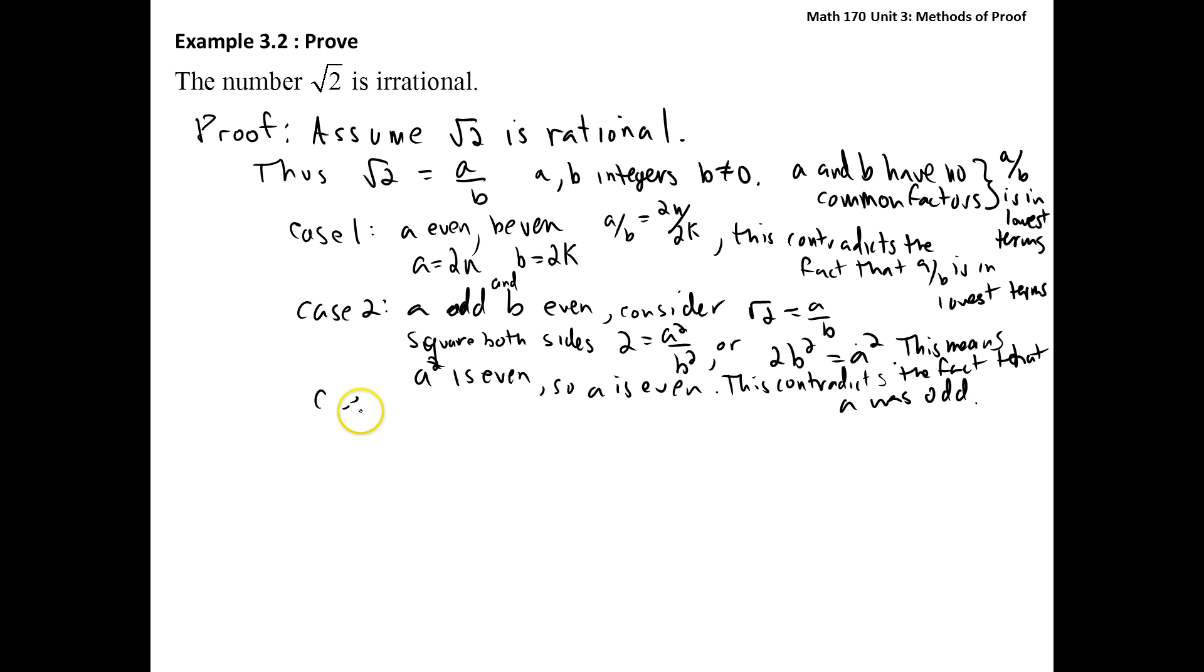So case 3 is kind of already done for us. Case 3 is if a is odd and b is odd. It's the same argument as in case 2. So we end up with the contradiction saying that a is even.